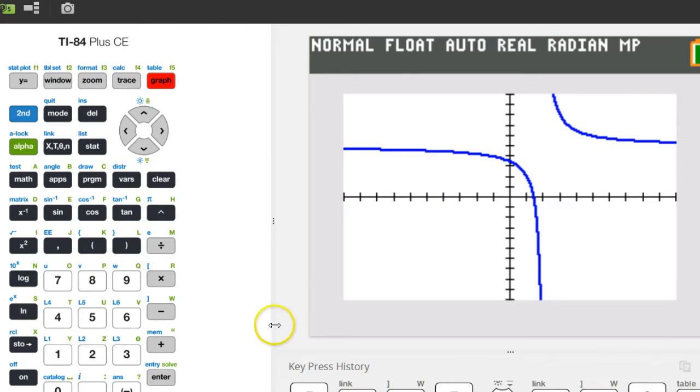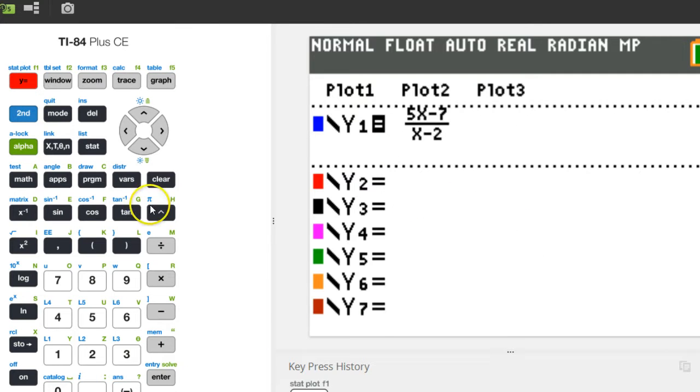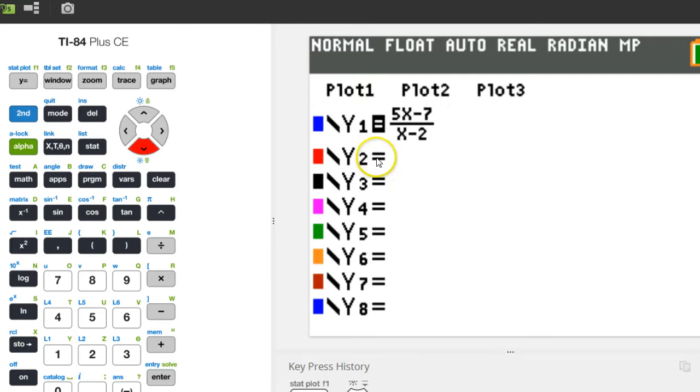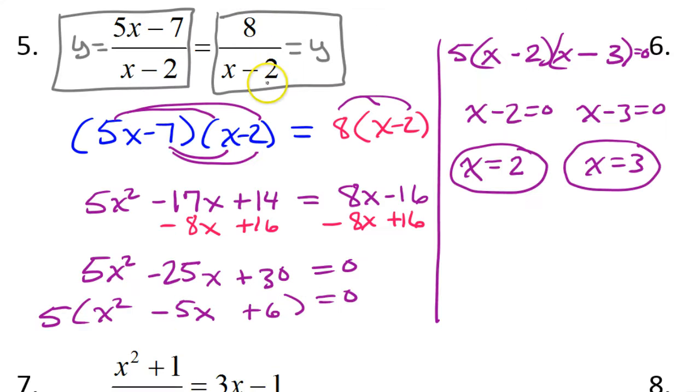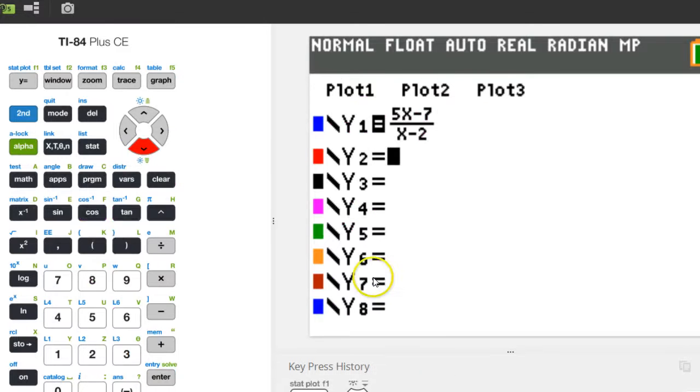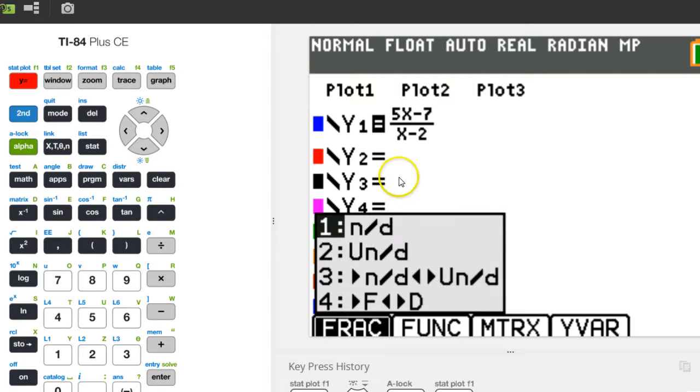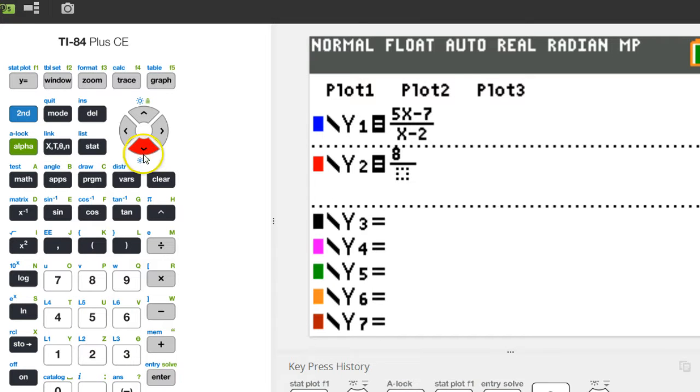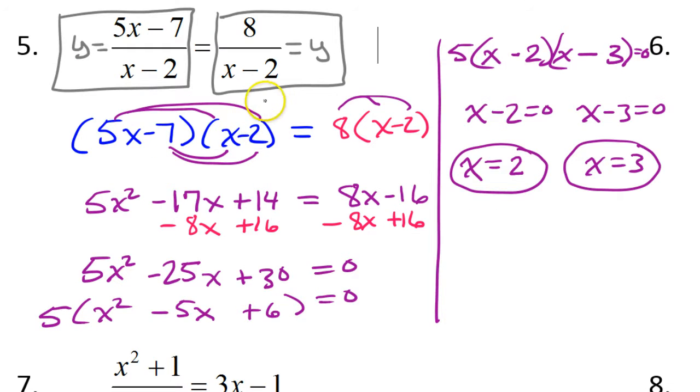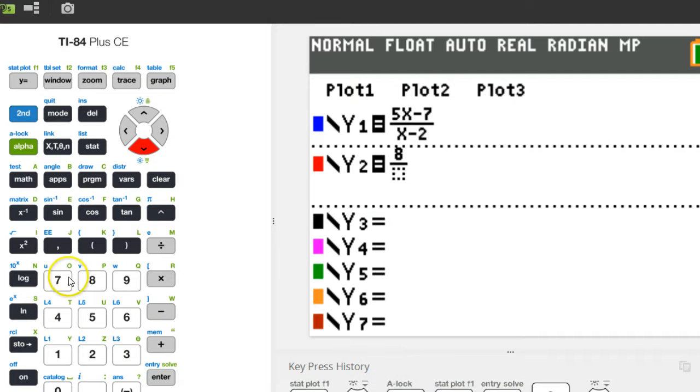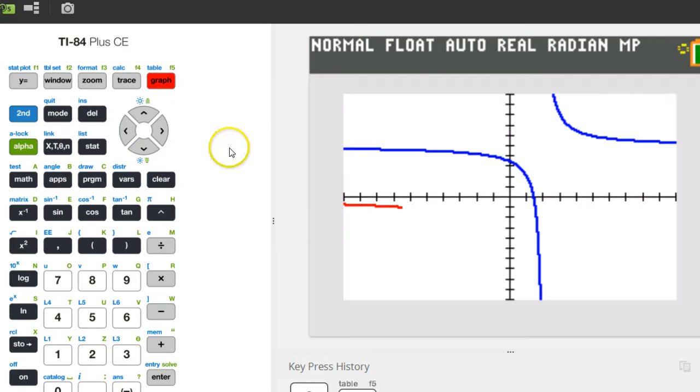I'm going to hit graph and see what I can see so far. So there's a graph of that first equation in blue. Now I'll go down to the next line for the next function and I'll type in 8 over x minus 2. Again, alpha Y equals will take me into function mode. I'll just hit enter. And it was 8 over x minus 2. Now let me hit graph again and see what I've got now.